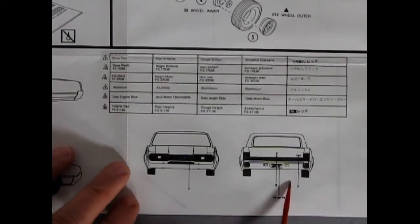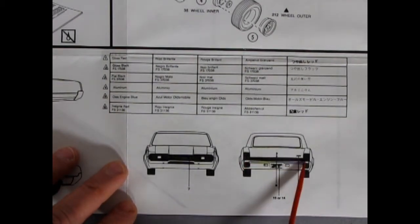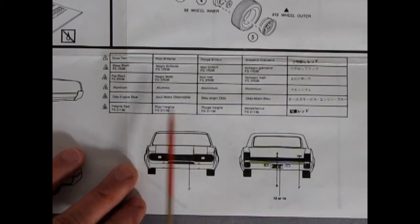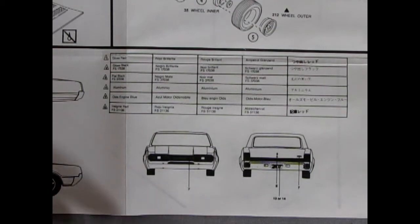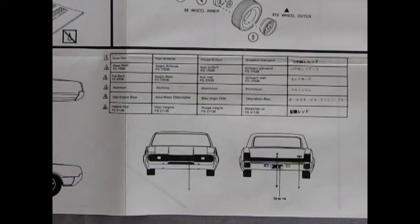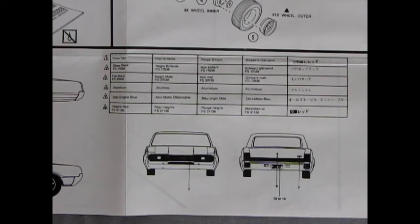And then, here we've got the front and rear of the car. Not the best, sort of, copy for detail. And then, there's the paint guide chart. So, very nice. You can see how Lindbergh is really up the bar in these kits, and made them very close to what AMT was doing at the time.